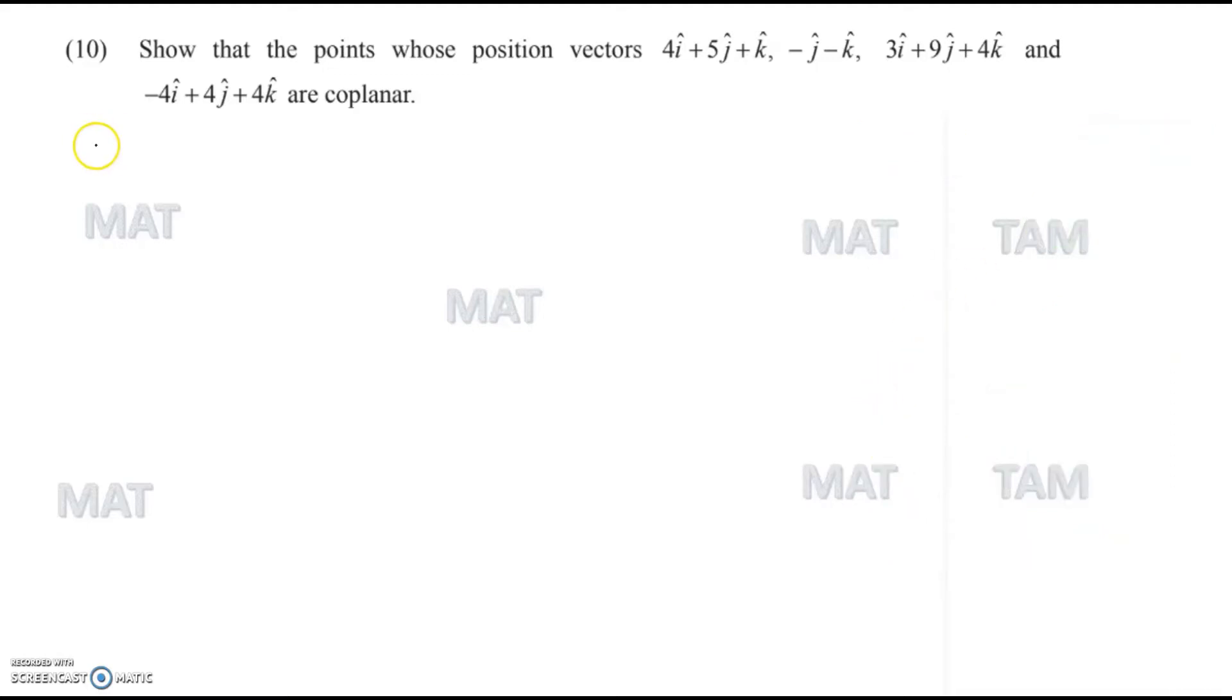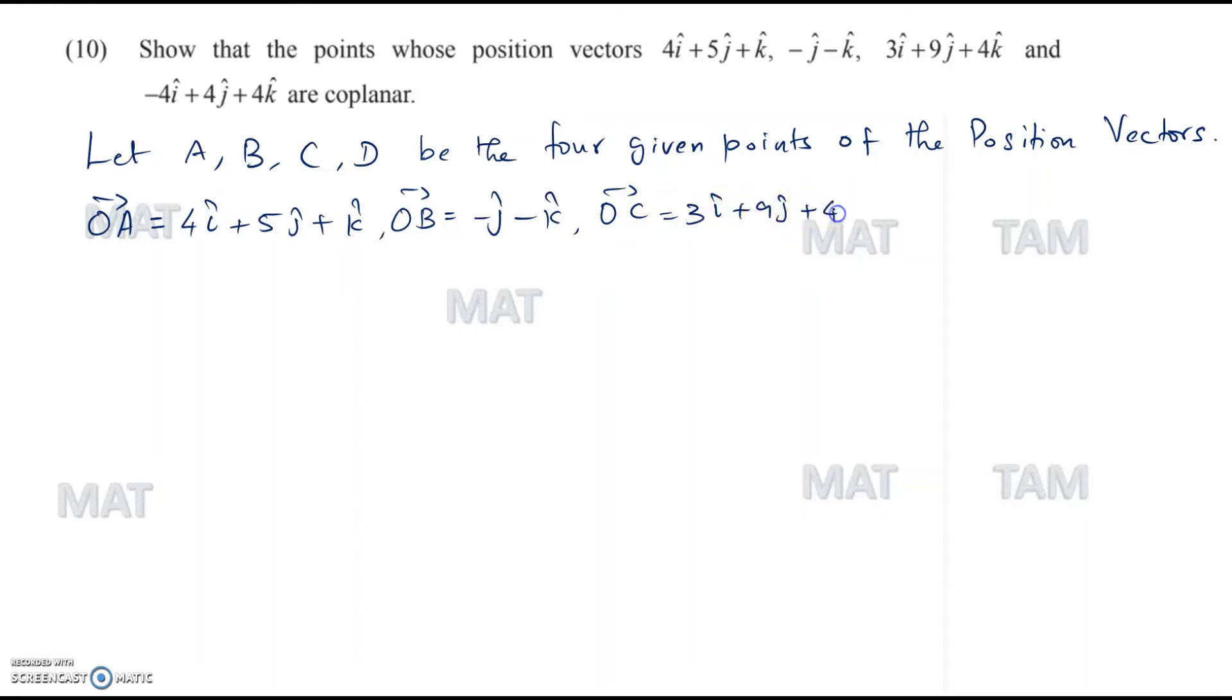Let's proceed. Let A, B, C, D be the four given points of the position vectors. Let's define OA vector as 4i cap plus 5j cap plus k cap and vector OB as minus j cap minus k cap.